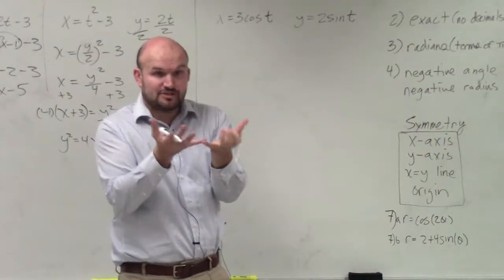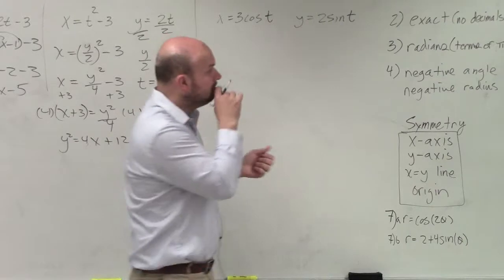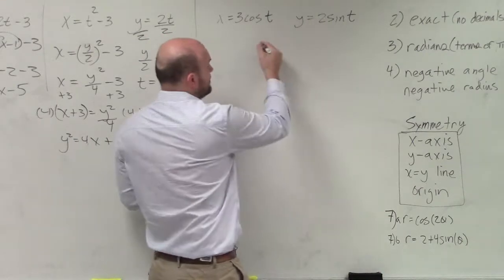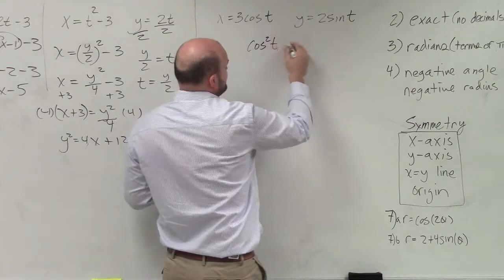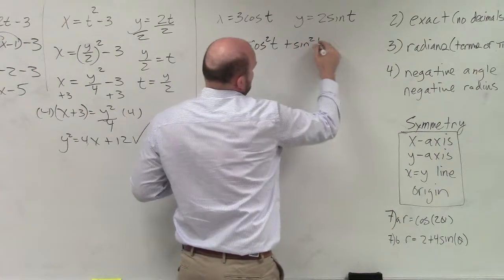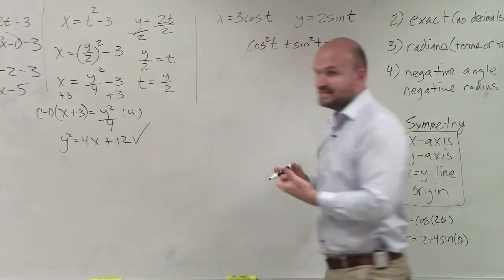So we want to write an equation that's in terms of x's and y's. Well, what we remember was cosine squared of t plus sine squared of t was equal to 1.